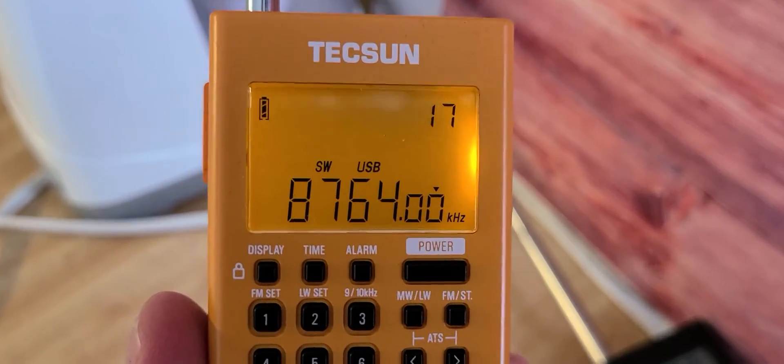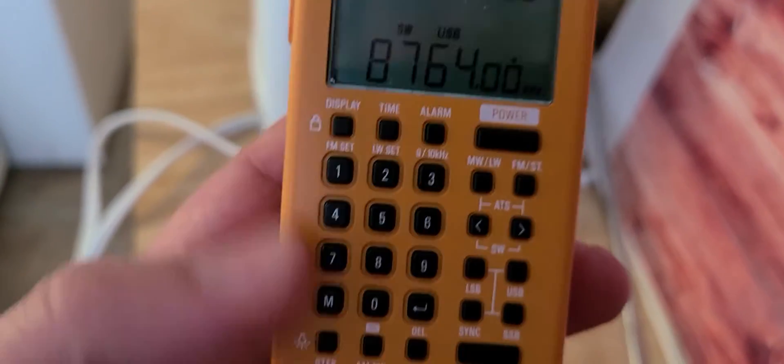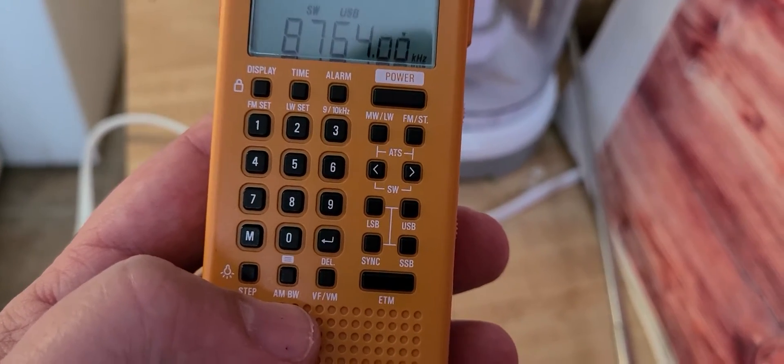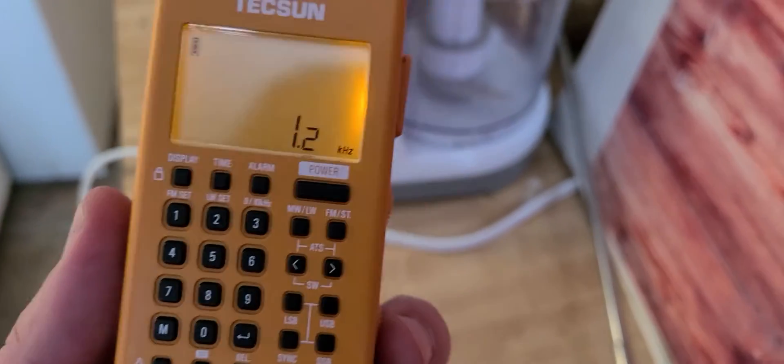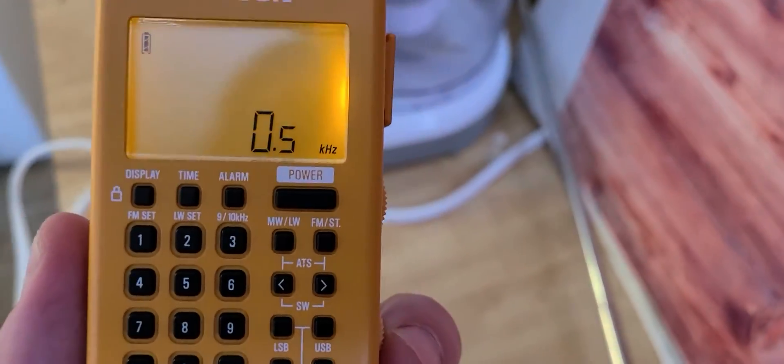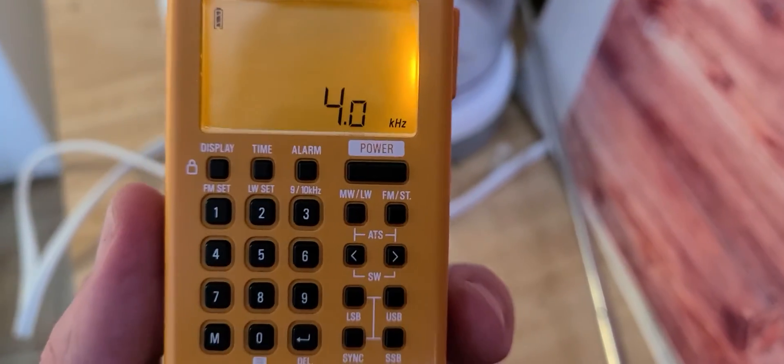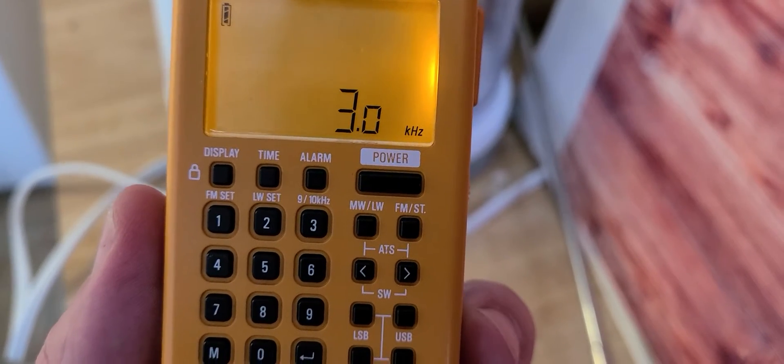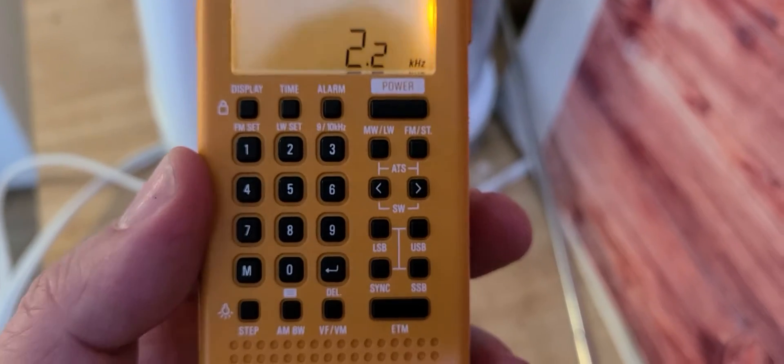So this is, of course you've got the bandwidth that you can check out also. So here we have 2.2, 1.2, 500 Hertz, up to 4 kilohertz in SSB. Pretty cool.